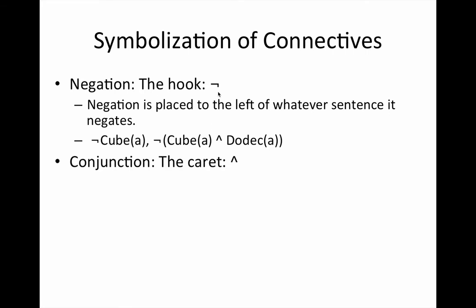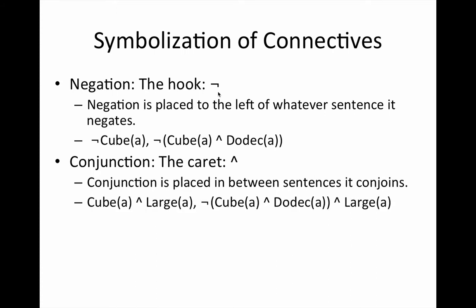The conjunction is always placed between the sentences it conjoins. So you have cube A conjunction large A. You have, it's not the case that both cube A and dodec A and A is large.